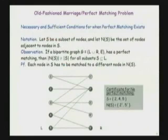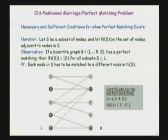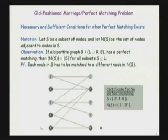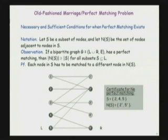We're interested in when there is a perfect matching — when can we match up all the boys and all the girls? We want necessary and sufficient conditions. Toward that end, let's define the neighbor set: if I have a set S of nodes, then N(S) is simply the set of nodes adjacent to S. The observation is: if a bipartite graph has a perfect matching, then the neighbor set N(S) must always be at least as large as S, for any set S.